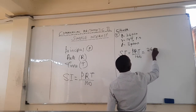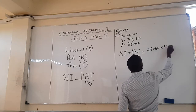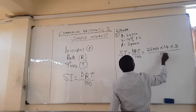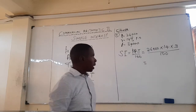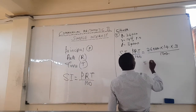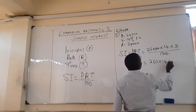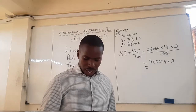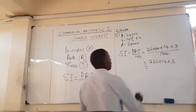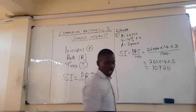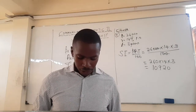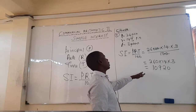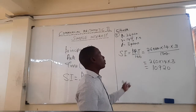So simple interest equals principal 26,000 times rate 14 times time 3, all over 100. You can use a calculator to do the calculation. The result is 10,920. That is how we get the simple interest — this is the money earned by 26,000 over a period of three years.